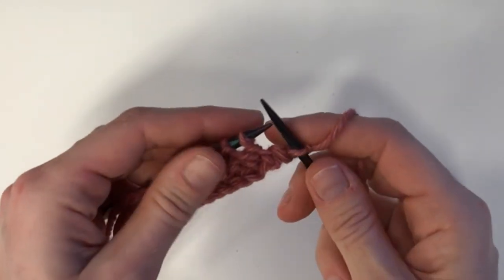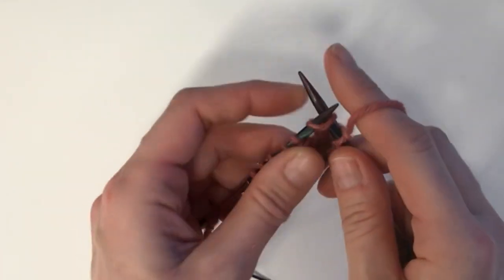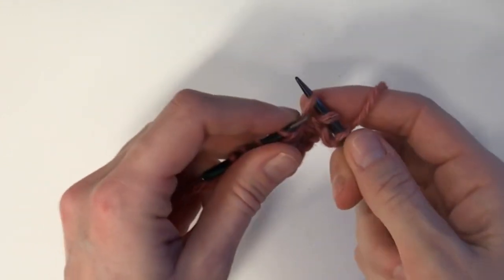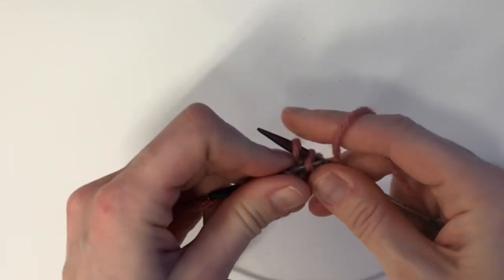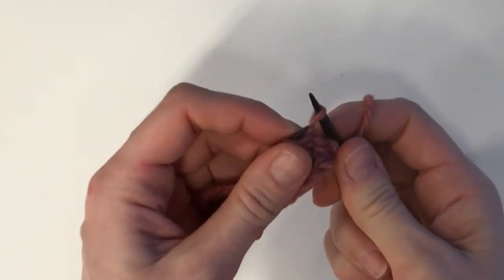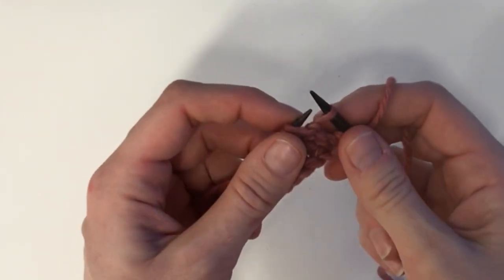Okay, so to do the LST, you're going to slip the next two stitches knitwise. You're then going to reverse their order by slipping the second one purlwise over the first onto the left hand needle.